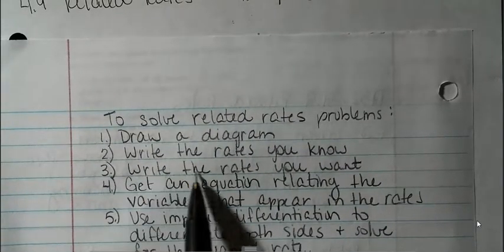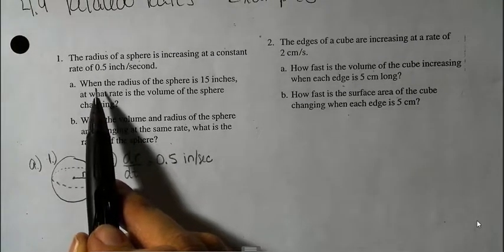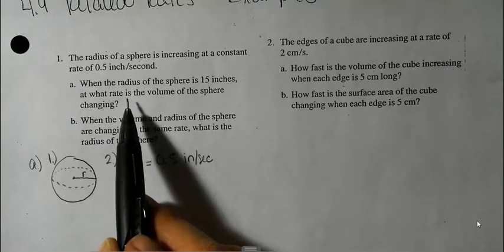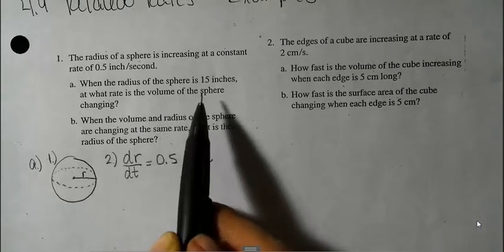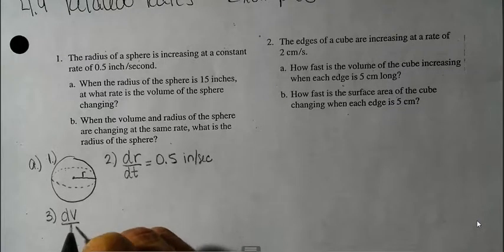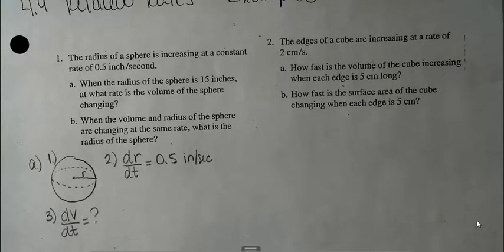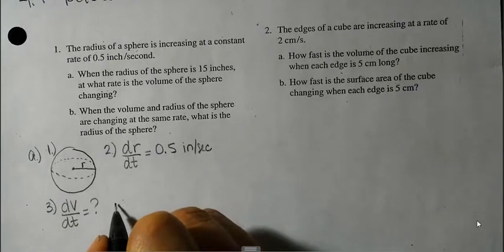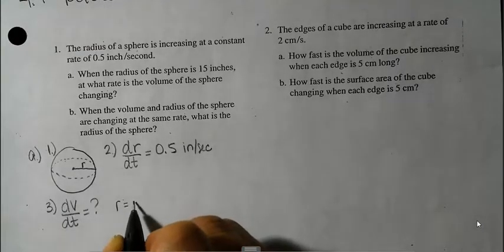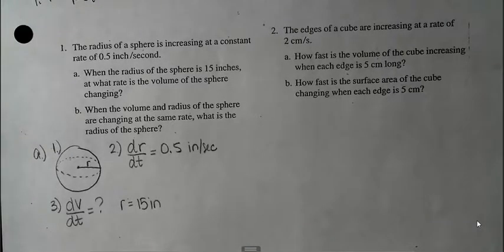Step three: write the rates that I want. Part A asks, when the radius is 15 inches, at what rate is the volume changing? So what I want to find is dV/dt. I'm given that I want this rate when the radius is 15 inches — that information will be important.